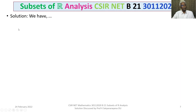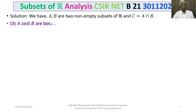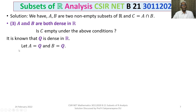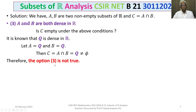Let us now consider Option 3: A and B are both dense in R. Is C empty under these conditions? Let's give a counterexample. It is known that Q is dense in R — that is, the closure of Q equals R, therefore Q is dense in R. Let A equal Q and B equal Q. Then C equals A intersection B equals Q, which is not empty. Therefore, Option 3 is not true.